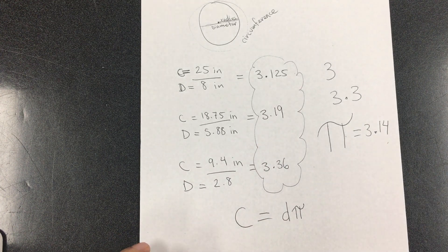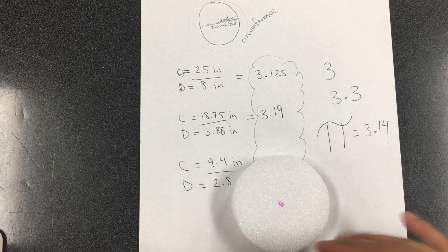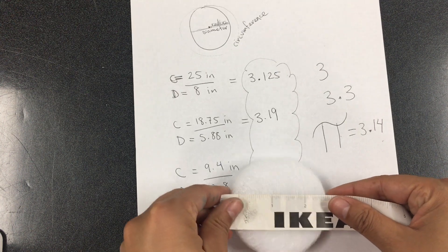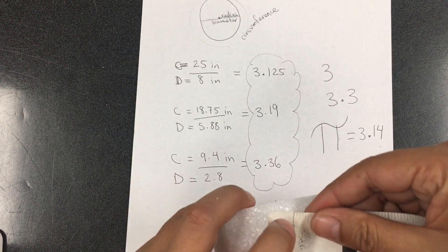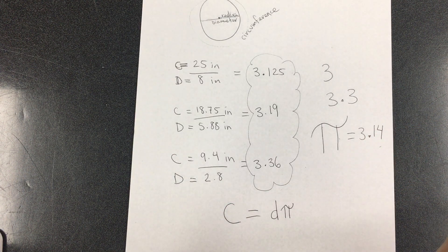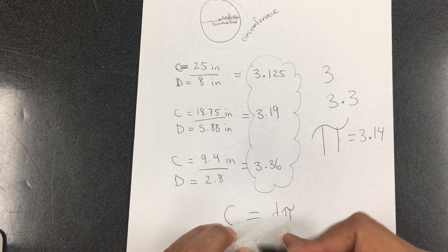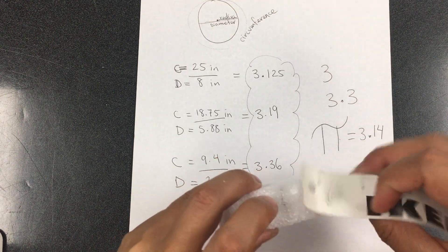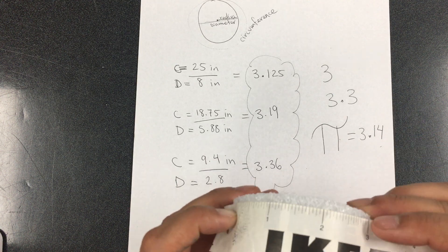Why? Because they noticed that if I have, for example, this one that is 2.8 — it's 2.8 — they noticed that that number goes around. The 2.8, it goes around once. Let me mark it in here. From here, the 2.8, you mark it once.